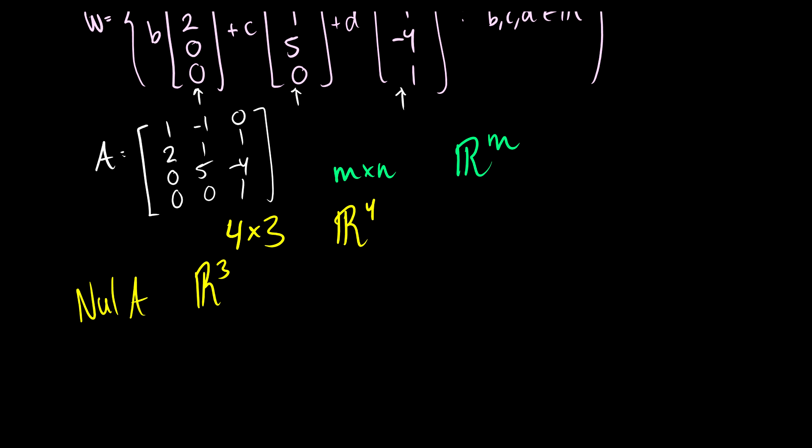And we can tell because we're going to have three vectors. So we have x1, x2, and x3. So when we take the null space, we are going to get vectors in R^3.